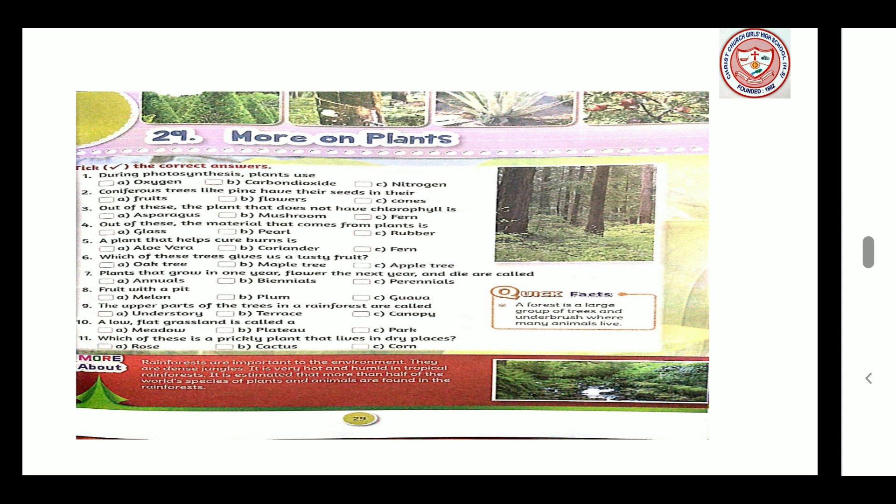Number 6: Which of these trees gives us a tasty fruit? Apple tree. Number 7: Plants that grow in one year, flower the next year and die are called biennials. Number 8: Fruit with a pit — plum. Number 9: The upper parts of the trees in a rainforest are called canopy. Number 10: A low, flat grassland is called a meadow. Number 11: Which of these is a prickly plant that lives in dry places? Cactus. Quick facts: A forest is a large group of trees and underbrush where many animals live.